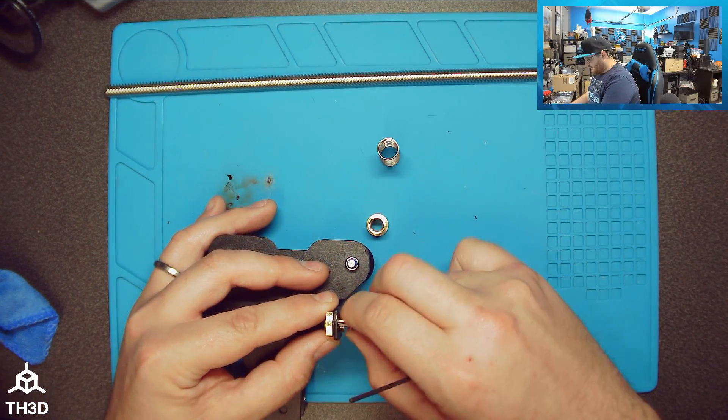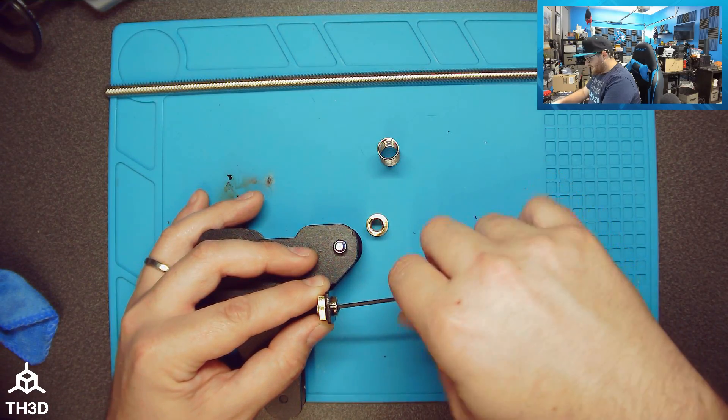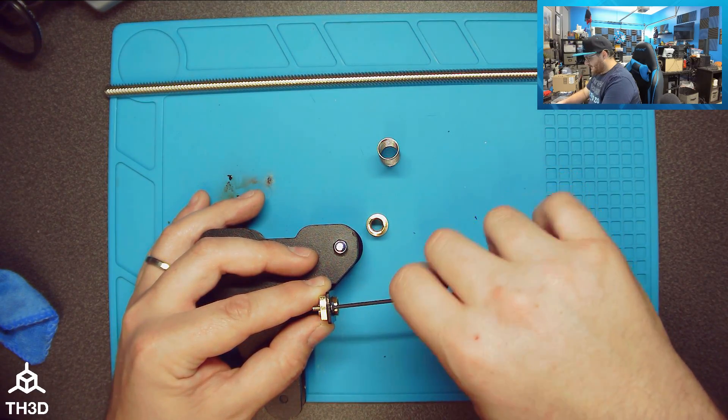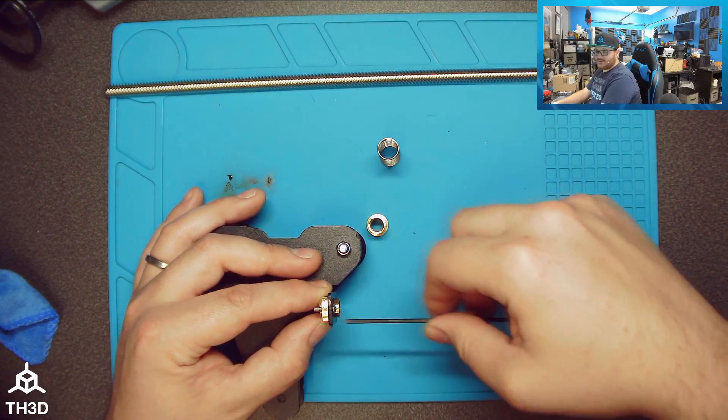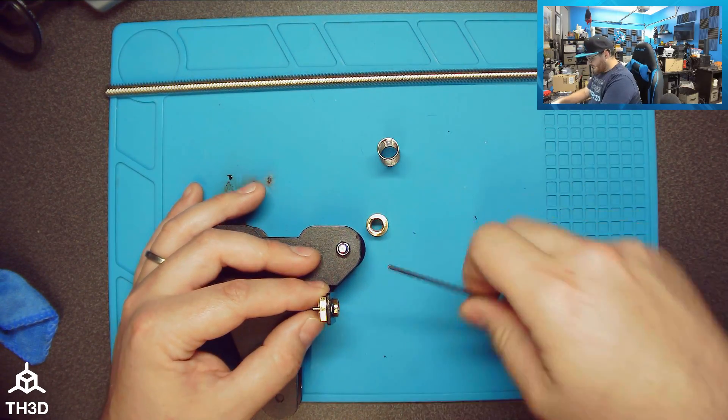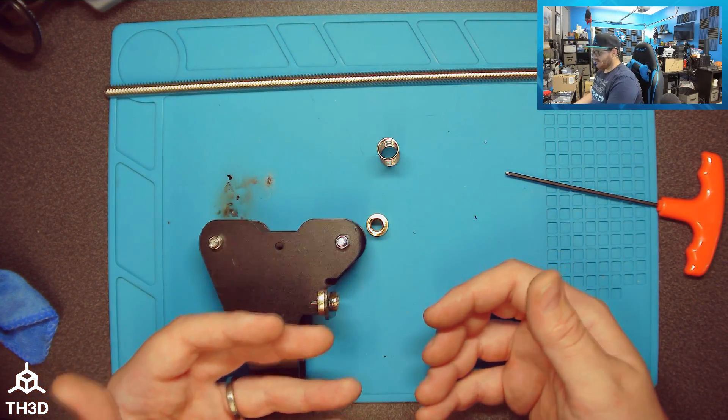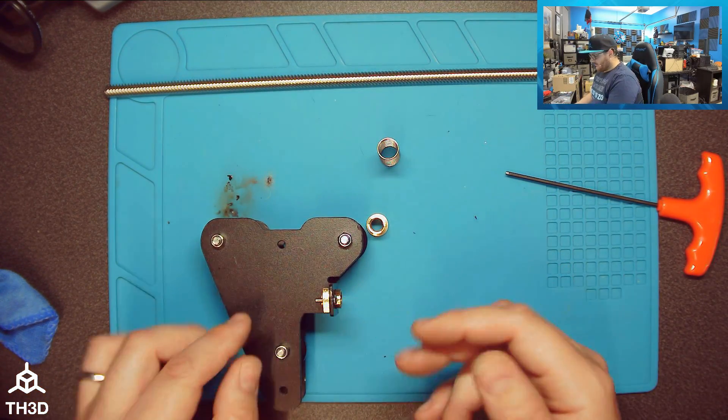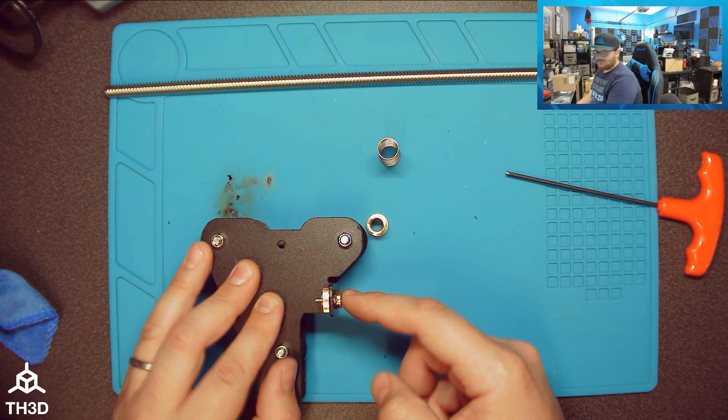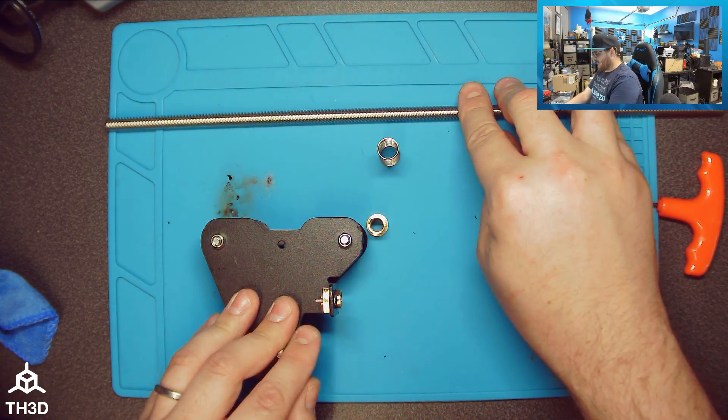Now, just as with the stock Creality lead screw nut, you do want to leave these a little loose if you are getting binding on your Z-axis. What I typically do is I'll run my Z-axis up and down with the nuts loose and then tighten them up and keep testing it until I get it to a point where everything's moving correctly and these aren't binding up. But typically that's why you want to leave these loose so this has some play in the bracket to shift if your lead screw itself isn't straight.